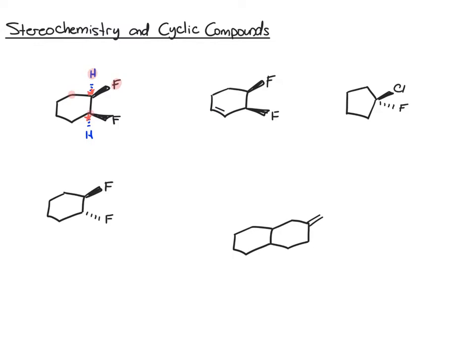The same logic applies to the bottom carbon — four different groups around it, so that's a chiral center too. But what you want to recognize in this case, and it's actually easier to see in rings than in acyclic molecules, is that you have a plane of symmetry that cuts this molecule in half. For that reason, this molecule is achiral and it's a meso compound.